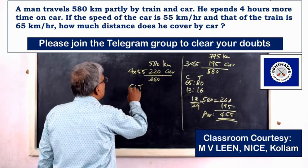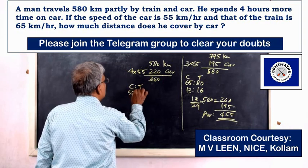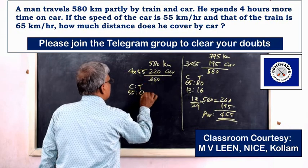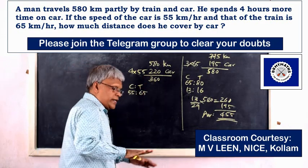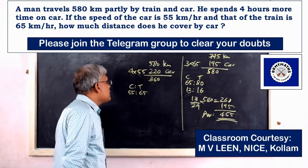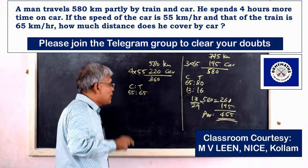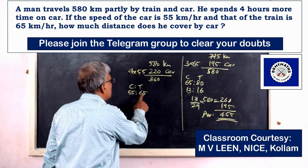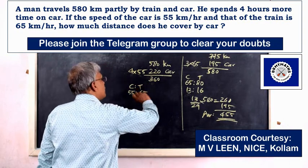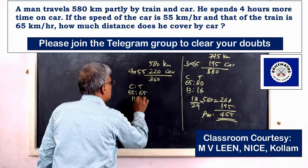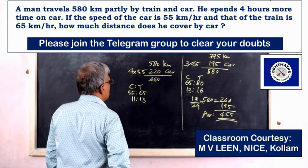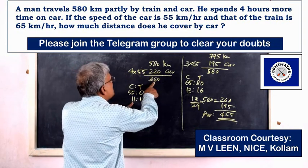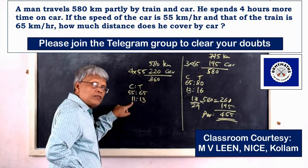Speed ratio of car to train is 55 to 65, simplifying to 11 is to 13. At equal time T hours, distances are 55T and 65T. So the distance ratio of car to train is 11 is to 13.